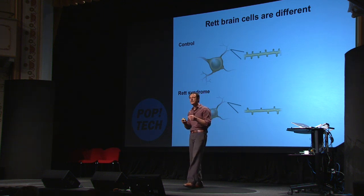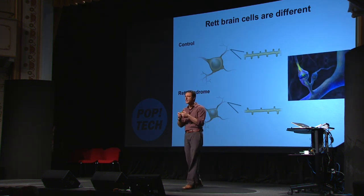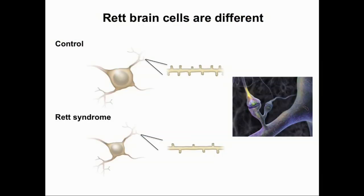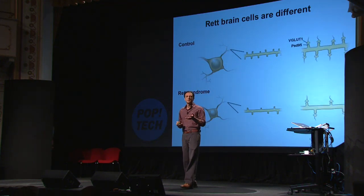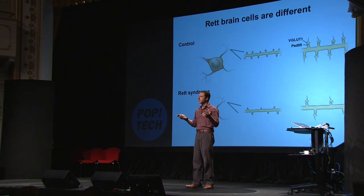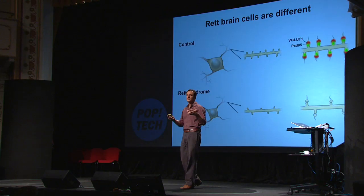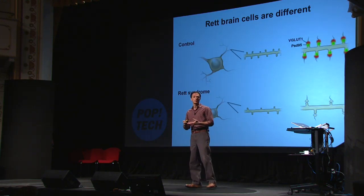Those spines are the structures that cells use to communicate, and eventually they form synapses — that's how information is transmitted between brain cells. We have fluorescent markers that light up when synapses are formed, and these allow us to quantify the number of synapses inside the network. We realized that Rett syndrome brain cells form a lower number of synapses compared to controls. That's quite remarkable because just by looking at the brain cells, you can tell if that person has the condition.